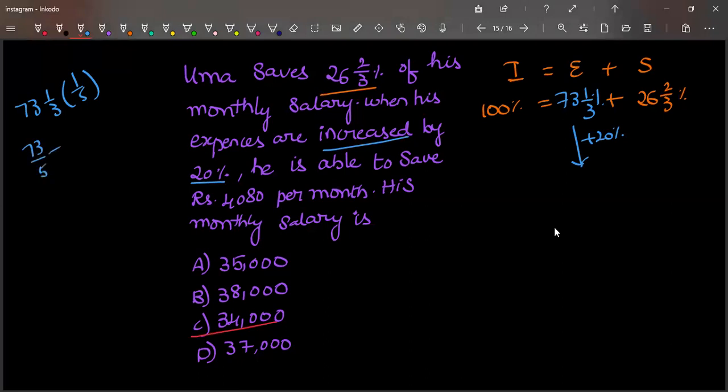I can write it as 73/5 plus 1/15. So 15, 219 plus 1/15, 220/15.